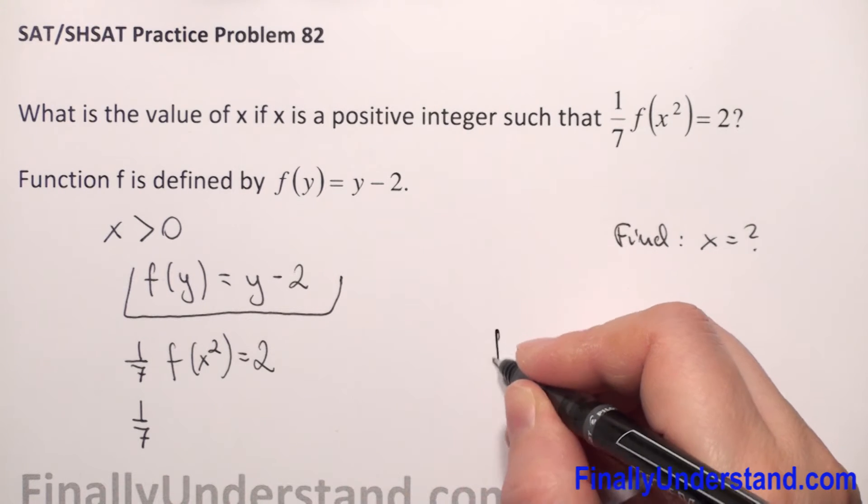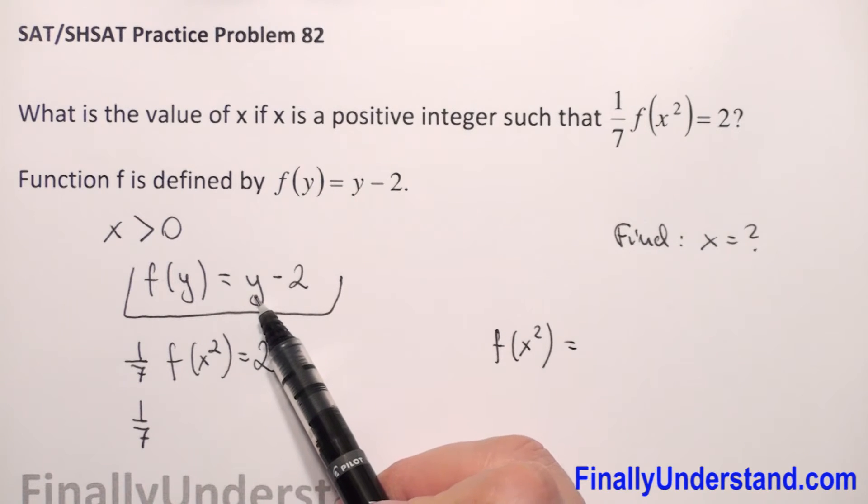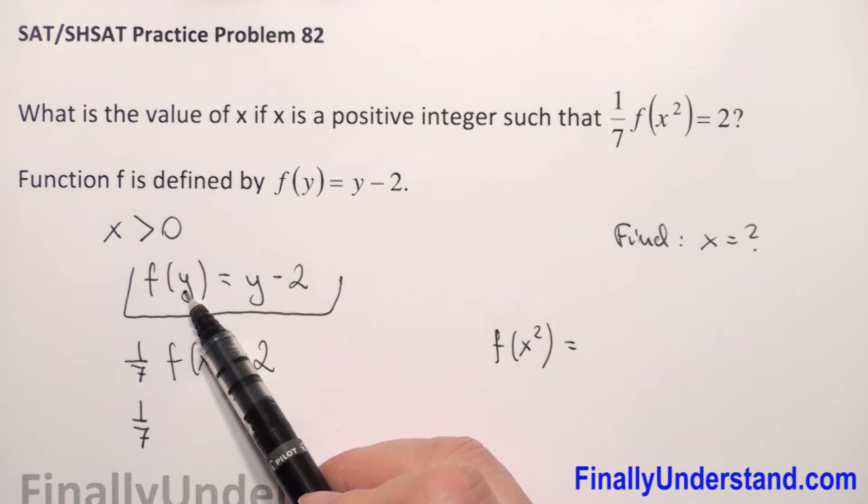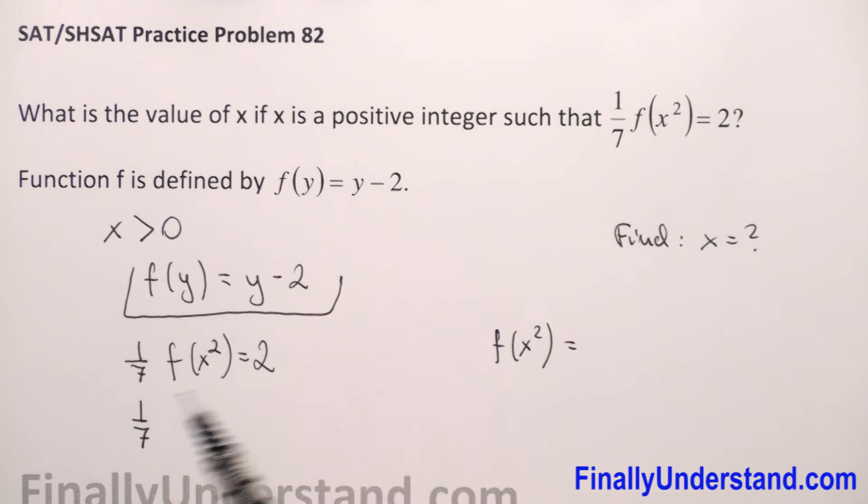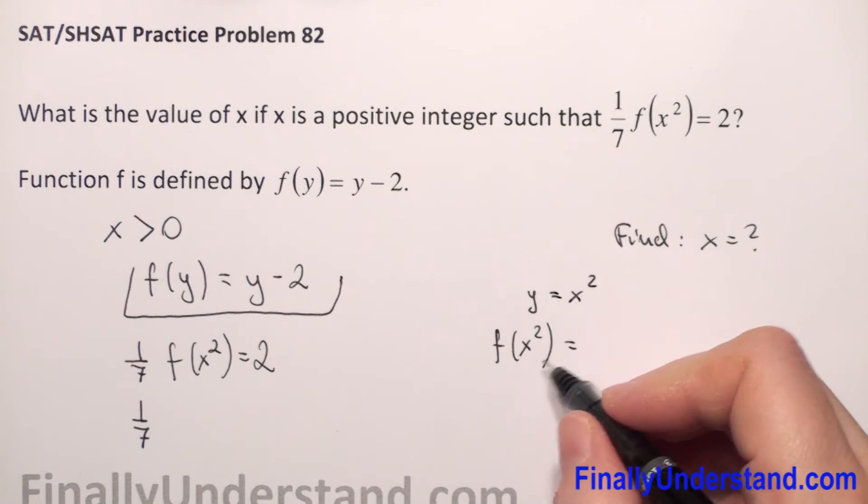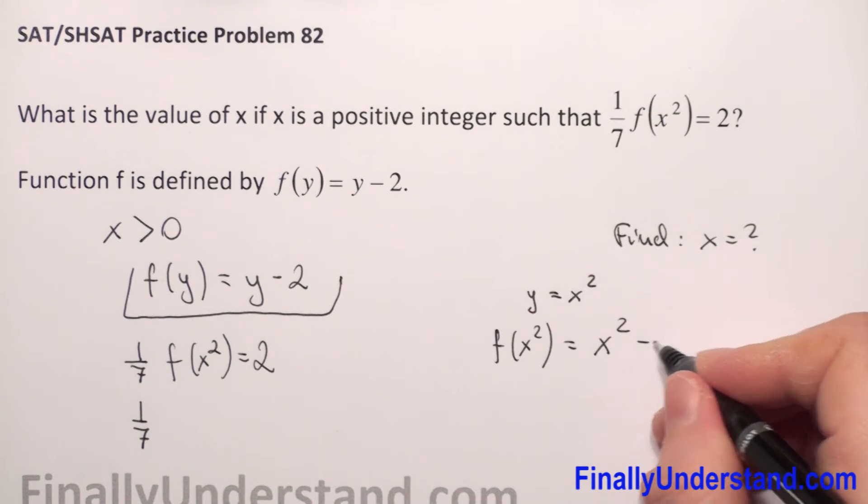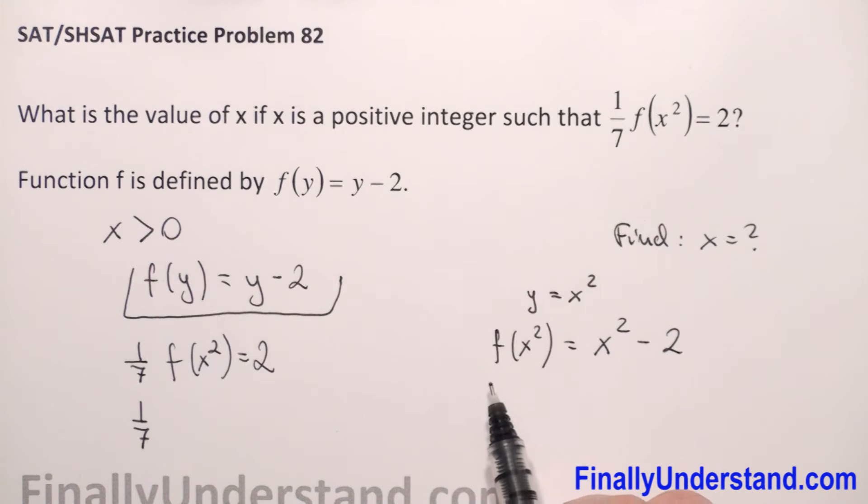F of x squared, what will it be? First we have y. So in our example y equals x squared. So we have x squared minus 2. This is our f of x squared.